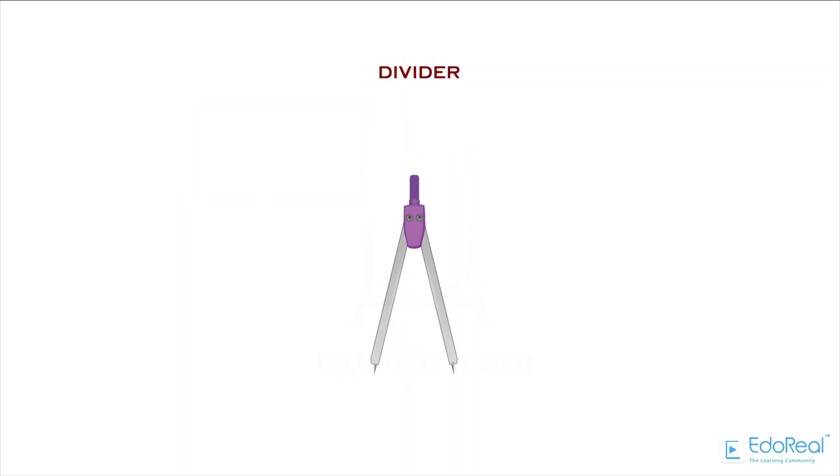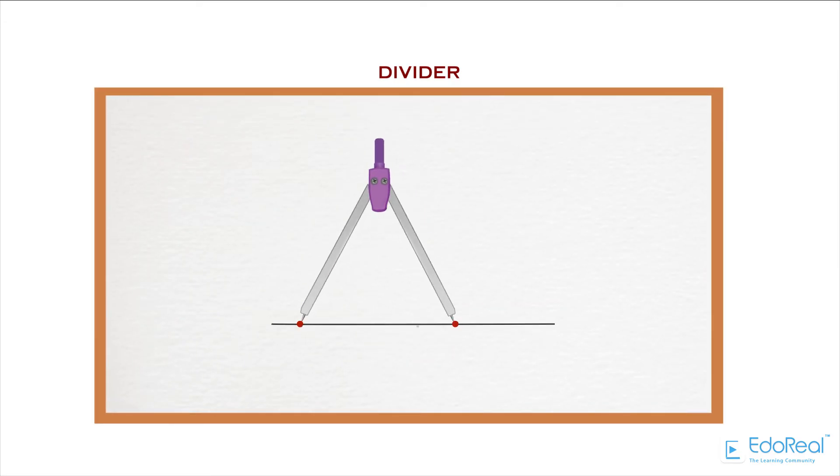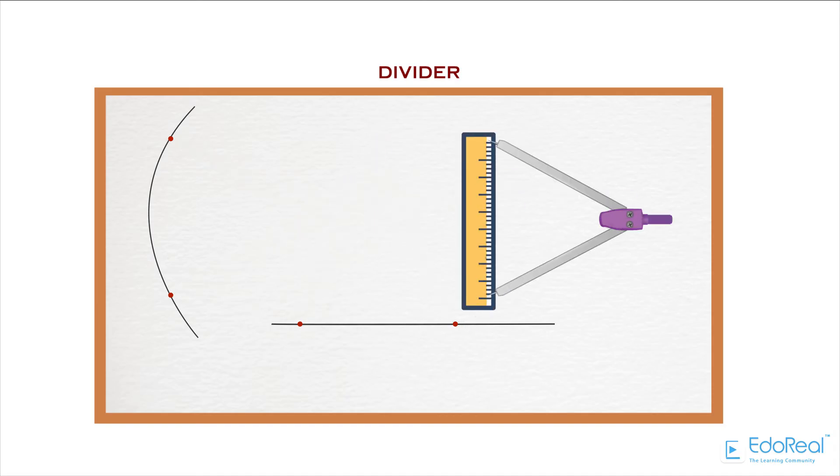The divider looks like a compass, but the difference is the two legs of the divider are provided with needles. This is used to divide a line or curve into equal parts. It is also used to check the measurements.